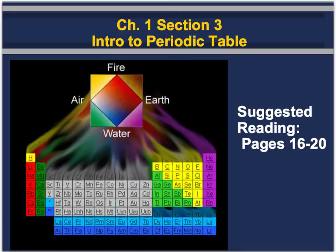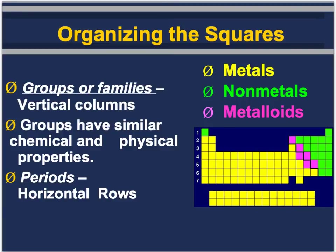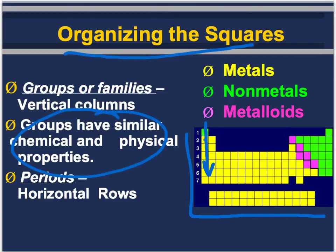The next section is the introduction to the periodic table — you have a few more pages in your textbook that you should read and be familiar with. When we look at the periodic table, it's organized into squares. Groups or families are the vertical columns, and groups have similar chemical and physical properties — that's an important idea to know. The horizontal rows are called the periods. You can see they're numbered one, two, three, four, five, indicating the periods.